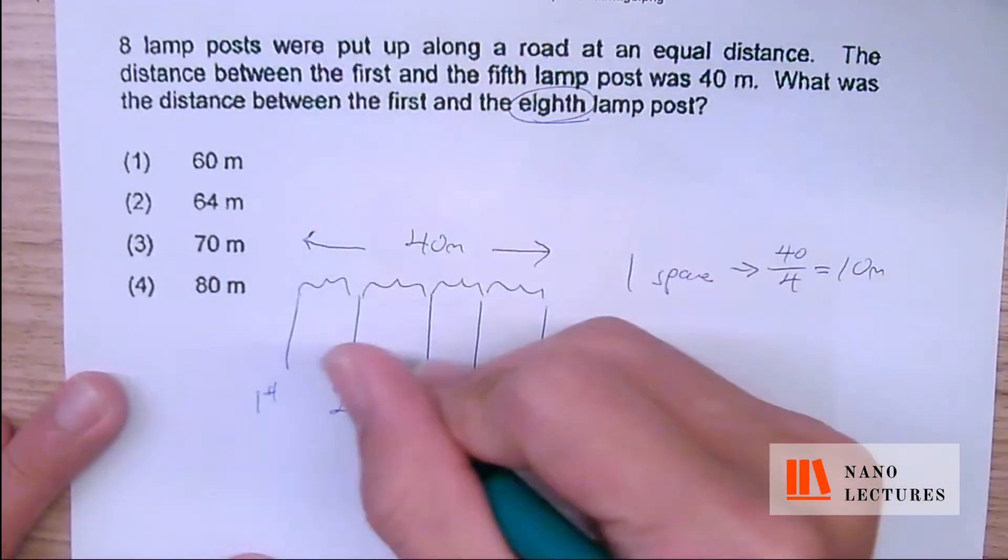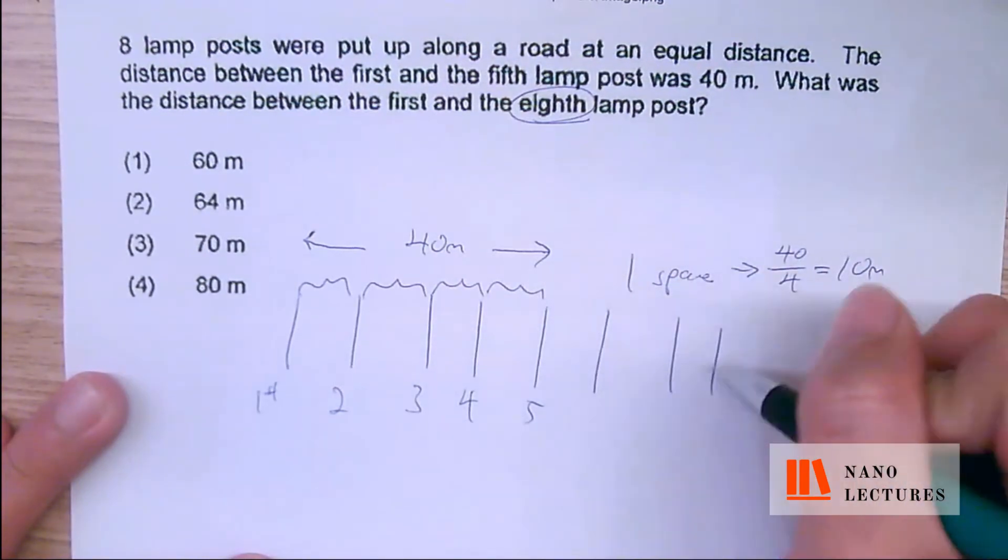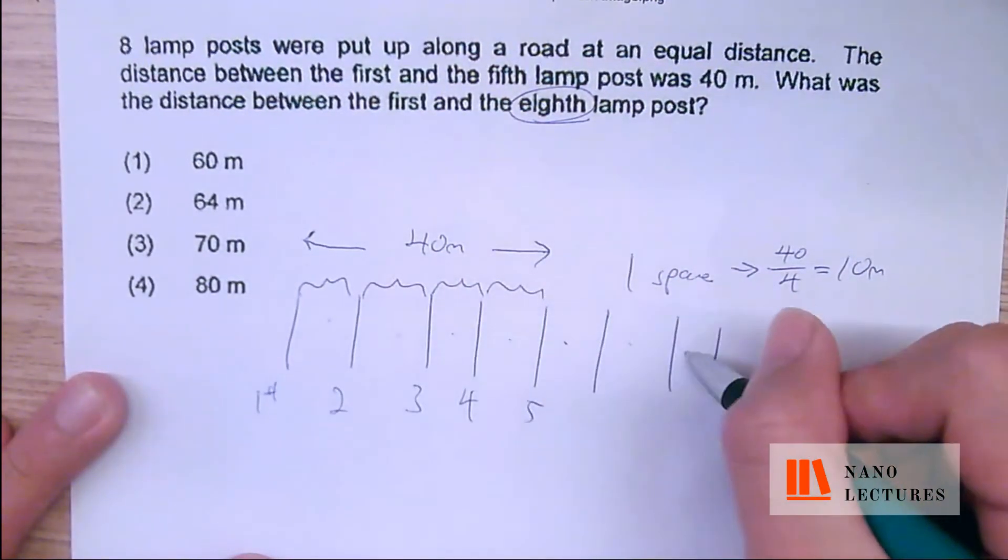1, 2, 3, 4, 5, 6, 7, 8. How many spaces are there? 1, 2, 3, 4, 5, 6, 7. See?